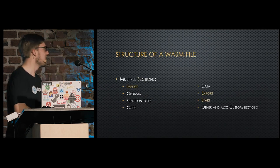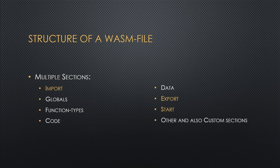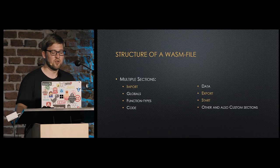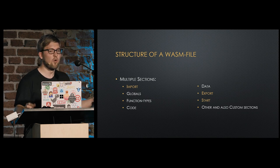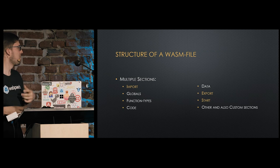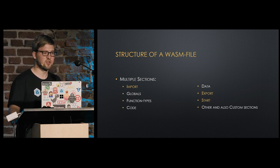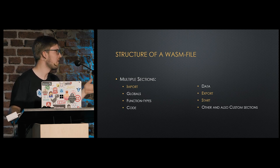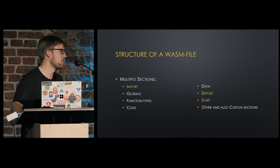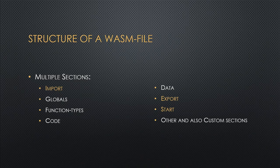The structure of a WebAssembly file is built out of binary sections, kind of blobs in the file. There's an import section, similar to import syntax in ECMAScript modules, where you describe dependencies of the module. There's a global section describing global variables, a function types section describing types of functions used — for example, a function with three four-byte integer arguments and one eight-byte integer return value. And there's a code section containing the actual bytecode instructions.